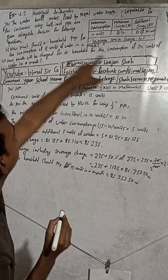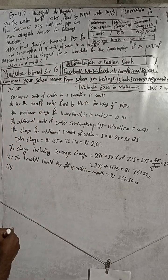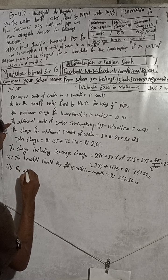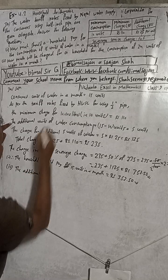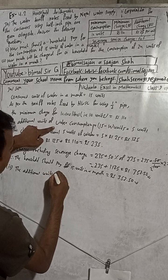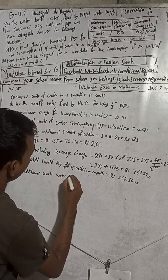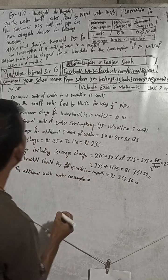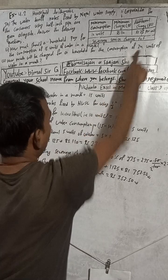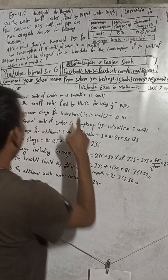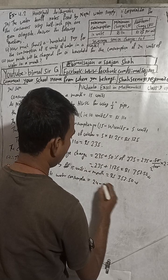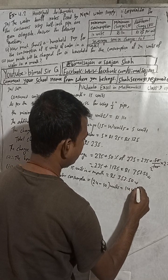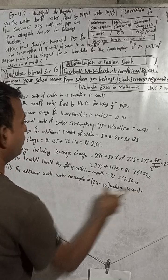Now for number two: how much will be charged for a household for the consumption of 24 units? The additional units of water consumption in a month equals 24 minus the minimum of 10 units, which equals 14 units.